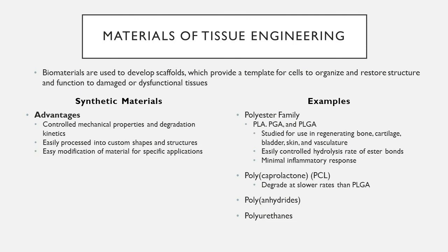Synthetic materials have advantages in direct contrast to natural material disadvantages: the ability to control mechanical properties and degradation kinetics, easy processability into custom shapes and structures, and easy modification for specific applications. Common polymers for tissue engineering include polylactic acid (PLA), polyglycolic acid (PGA), and their copolymer PLGA, studied for regenerative bone, cartilage, bladder, skin, and vasculature. They have easily controlled hydrolysis rates tunable by the ratio of glycolic to lactic acid — glycolic acid hydrolyzes faster and thus degrades faster.